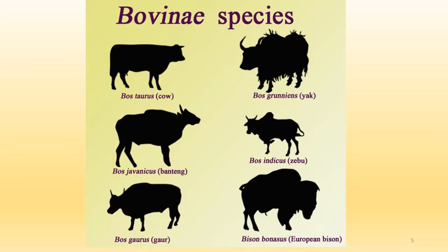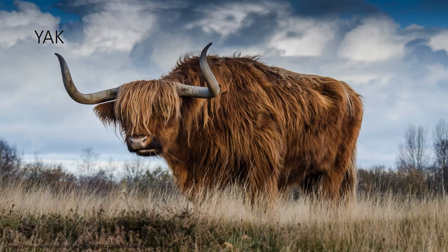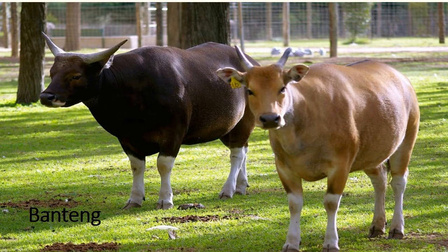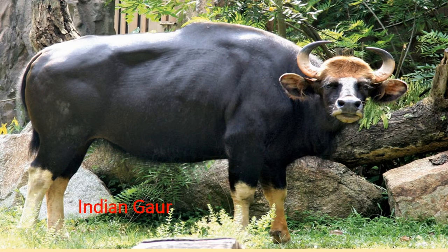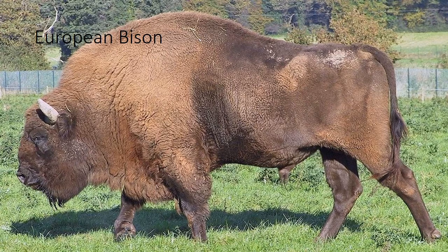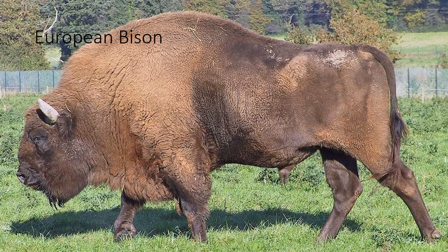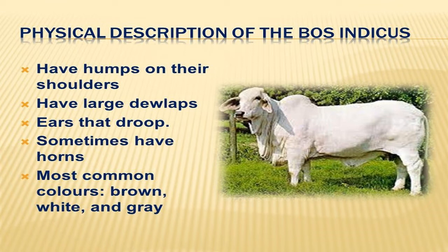What are the different species that come under family bovidae? You have the yak, which can be found in Tibet today. You have the banteng, which are special cattle found only in Indonesia — they are a rare breed. You have the zebu cattle or bos indicus. You have the Indian gaur or the Indian bison, European bison, and American bison. We are mainly concerned about bos indicus and bos taurus, both of which are the cattle that have been domesticated.